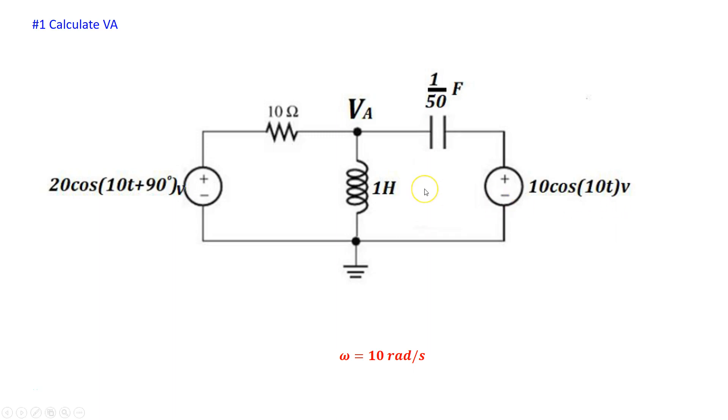So 20 cosine 10t plus 90 degrees can be written as a phasor with magnitude 20 and angle of 90 degrees. Similarly, the 10 cosine 10t voltage source can, in terms of its phasor representation, be written as 10 angle 0 degrees as long as the frequency is 10 radians per second. So that's the first thing.